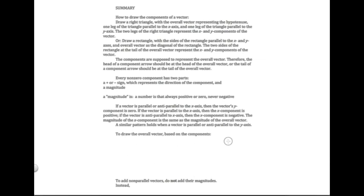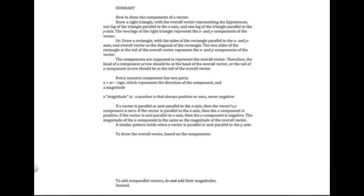If you are given the components and need to draw the overall vector, it's basically the same idea: there's a right triangle method or a rectangle method. In the right triangle method, the components are the legs and the overall vector is the hypotenuse. In the rectangle method, the components are the sides and the overall vector is the diagonal. The direction of the overall vector is determined by the same rule: the overall vector head overlaps with the head of a component, or the overall vector tail overlaps with the tail of a component.